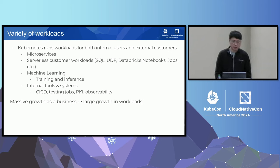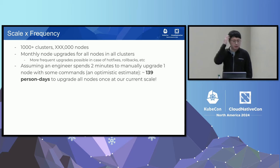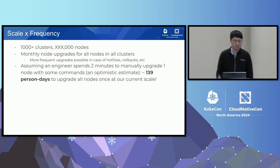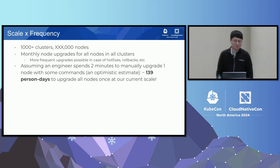With all of that growth, we still have to do all the frequent upgrades with no downtime to any of the workloads. At our scale, we now have over 1,000 Kubernetes clusters and hundreds of thousands of nodes. We need to run monthly node upgrades for all nodes in all clusters. Assuming an engineer spends two minutes to manually upgrade a node — a very optimistic estimate — at our scale it would take 139 person-days to upgrade all nodes at once. That's certainly not scalable.